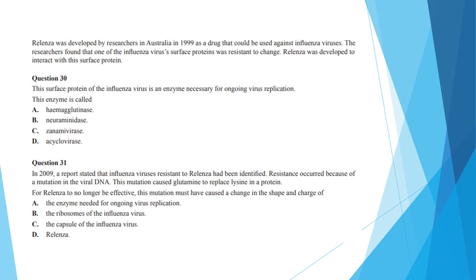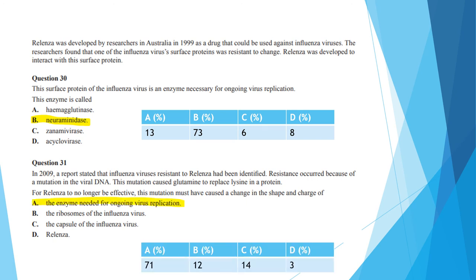Question 30 and 31 use the above information. Question 30 asks what this surface protein is, which is necessary for ongoing virus replication. This is knowledge recall and the answer is B. Question 31 asks, in the case of drug resistance due to a mutation in a viral DNA, this mutation must have caused a change in the shape and charge of? And the answer here is enzyme that's needed for ongoing virus replication. While changing a ribosome or the capsid of an influenza virus may affect how the virus functions, it does not necessarily mean that the virus can't replicate. So here A is the correct answer.